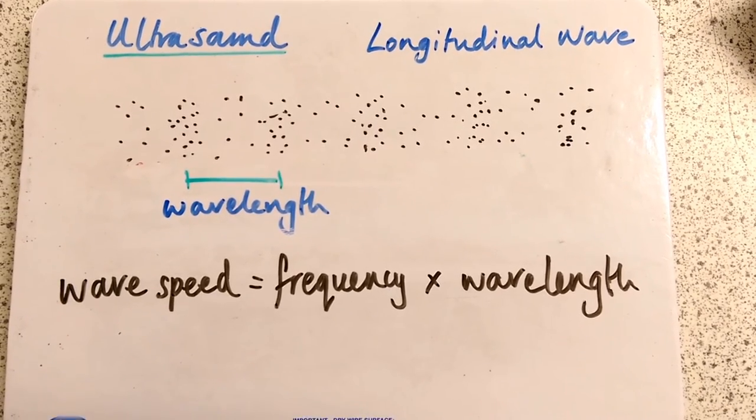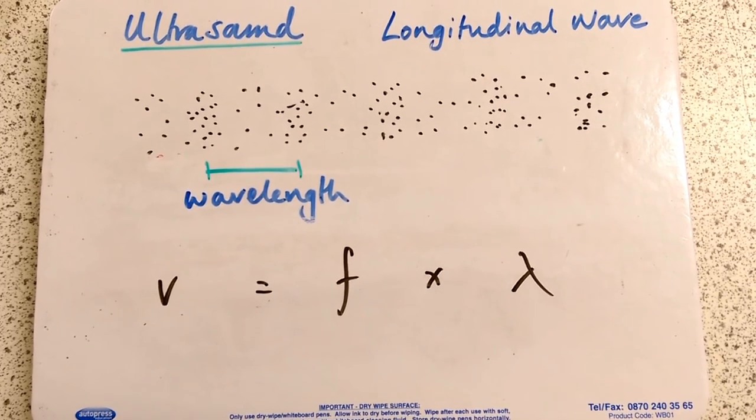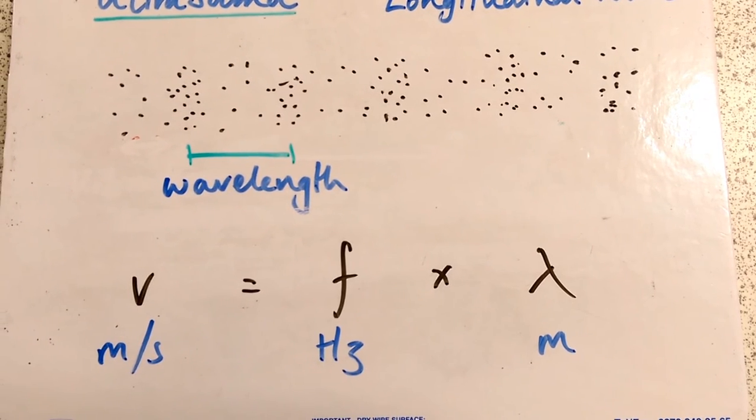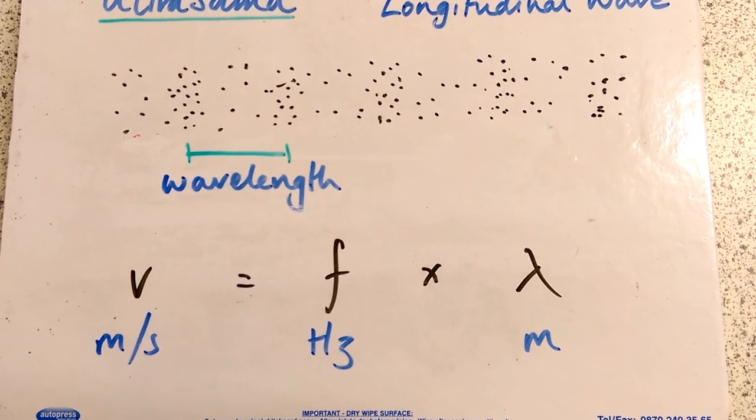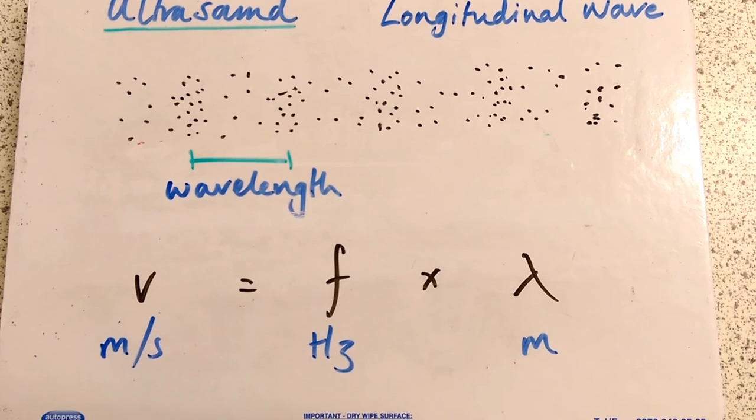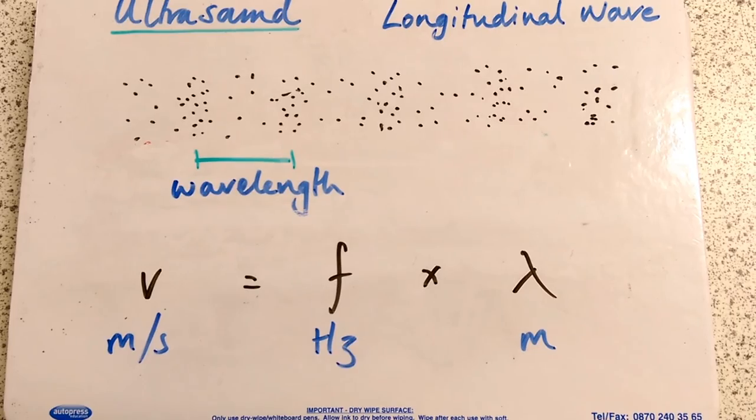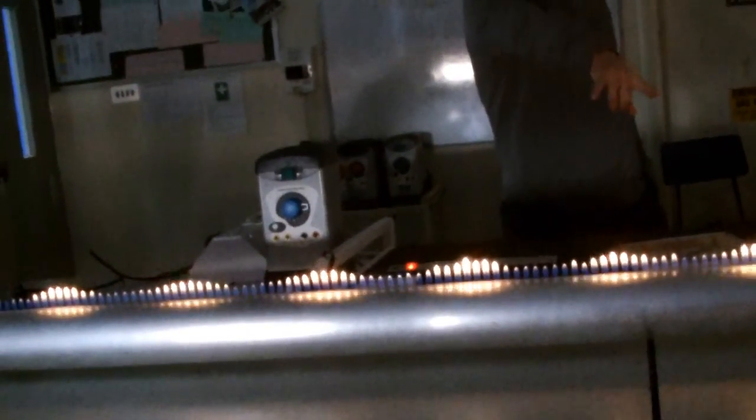If you increase the wavelength you decrease the frequency. We use the short form, the algebra: v for wave speed, f for frequency and lambda for wavelength. We use the units meters per second for speed, hertz for frequency and meters for wavelength. Hertz is a bit like saying per second, it's how many vibrations per second. So meters times per second gives you meters per second. Remember I said to you, higher frequency, lower wavelength, shorter wavelength. Can you all see that? Lower frequency, longer wavelength.